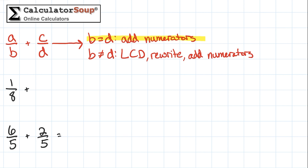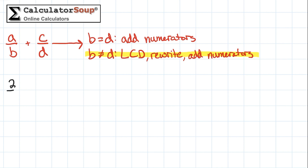Next, let's look at the second method for adding fractions, where the denominators are different. In this case, we will first find the least common denominator and rewrite the fractions we want to add using equivalent fractions with the LCD as the denominator. Then we will add the numerators, put the result over the new denominator, and simplify if needed. Let's do an example: 2/3 plus 1/4.